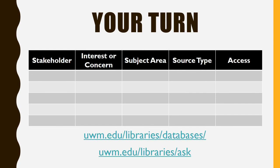Now it's time to do the same for the issue or problem you're focusing on. List your stakeholders, their interests or concerns, subject areas they might work in or that might represent their concerns, genres they create, and where you could access the genres they create. You're making your plan for how you will incorporate stakeholder perspectives and select sources that appeal to a specific audience of your choosing.